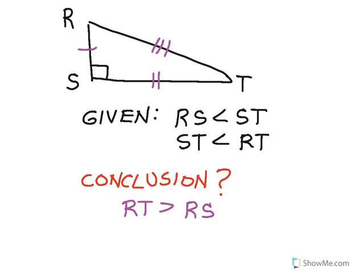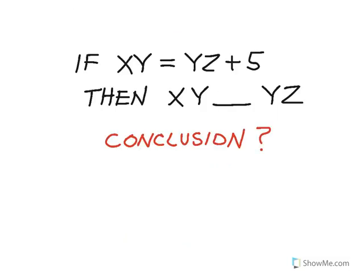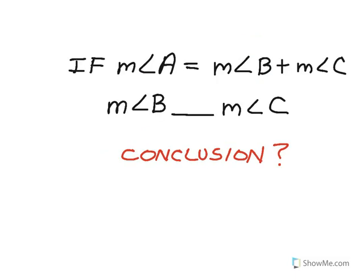Second example: if XY equals YZ plus 5, can I compare XY to YZ and draw a conclusion? Sure, because XY is the sum of these two things, it has to be greater than either of them, so XY has to be greater than YZ. Another example: if the measure of angle A equals the measure of angle B plus angle C — so B and C by the angle addition postulate sum up to angle A — can I draw a conclusion about B versus C? No, you cannot. They are both parts of A and I don't really know how those two compare, so I really can't draw a conclusion.